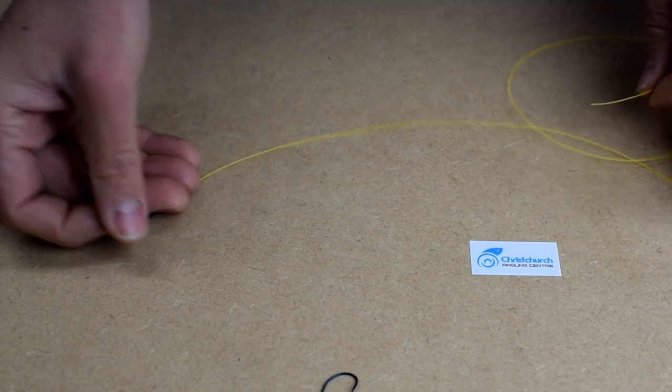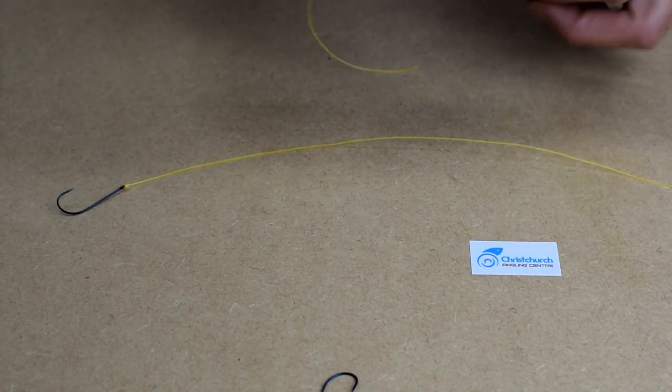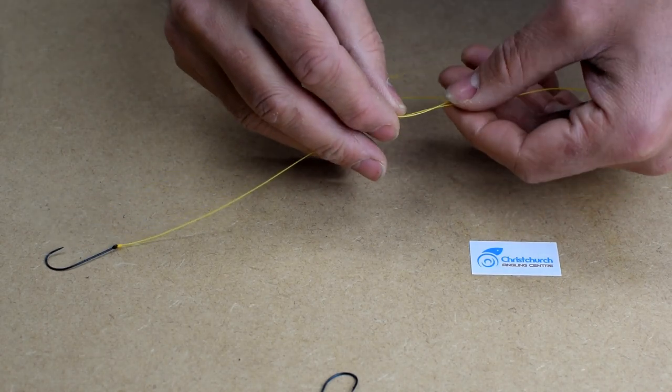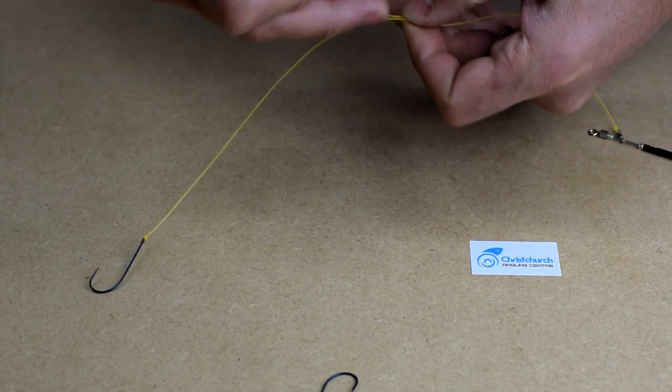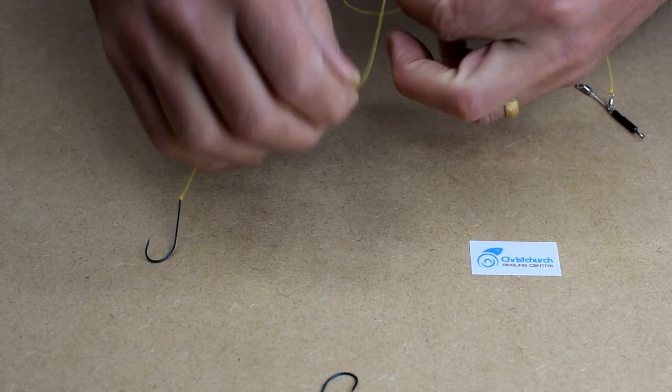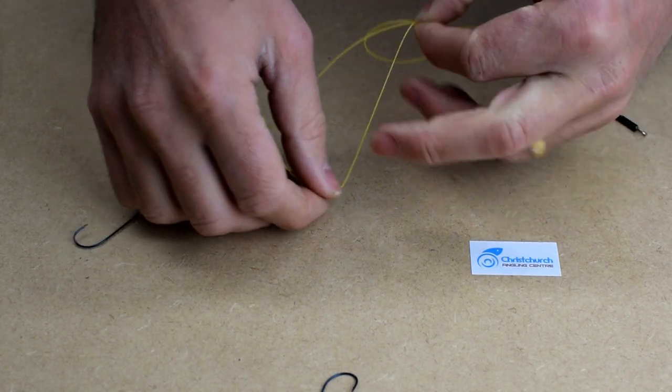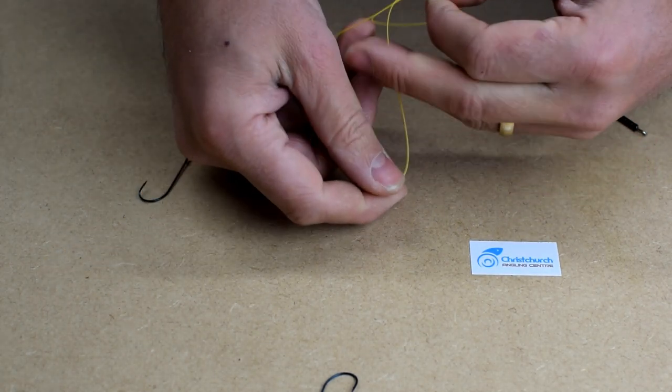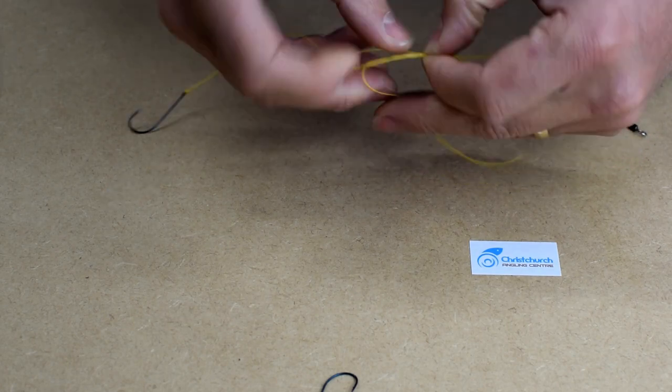So on your main snood line there, grab the other bit of line you've just cut off, form each other loop like so, and tuck that through three times. This is just a simple stop knot.